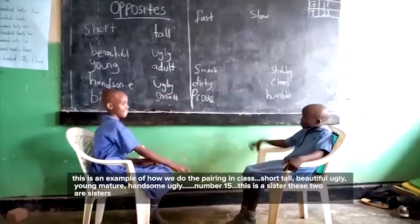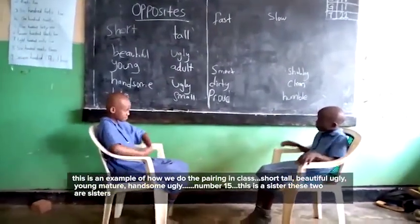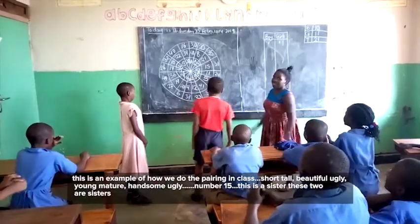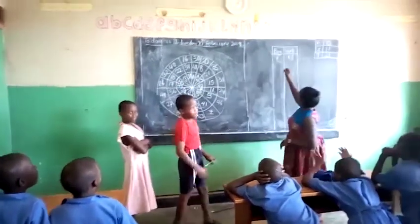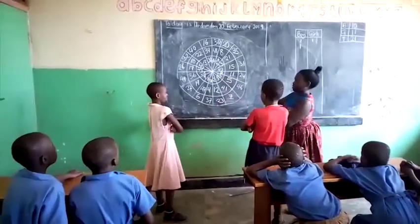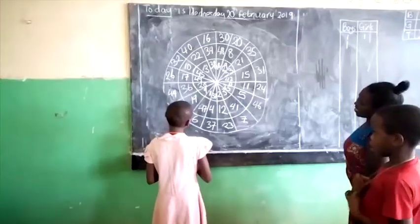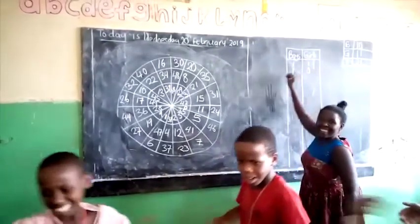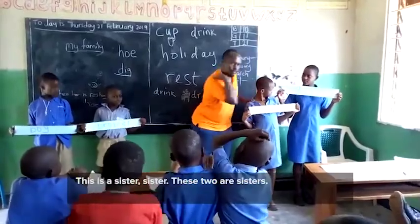This is an example of how we do the pairing in class. Children practice opposite words: short/tall, beautiful/ugly, young/mature, handsome/ugly. They also practise numbers, such as number 15, and family vocabulary: "This is a sister. These two are sisters."